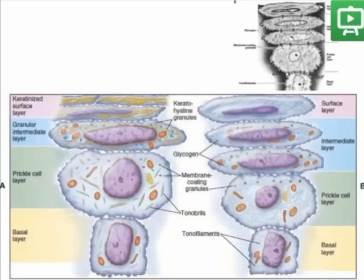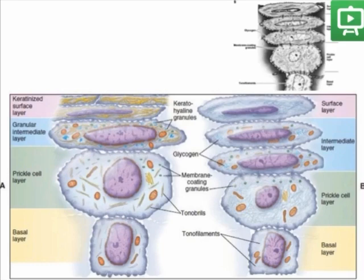As for the non-keratinized epithelium, we see more organelles in the surface layers, less developed tonal filaments, and there are no keratohaline granules present. This epithelium has greater permeability compared to the keratinized.